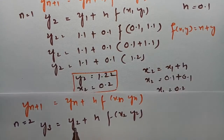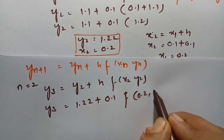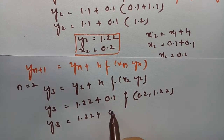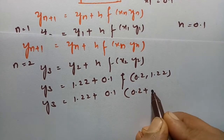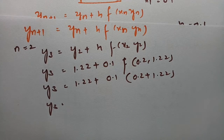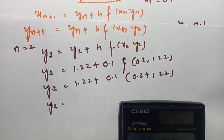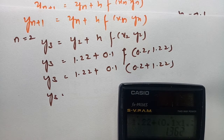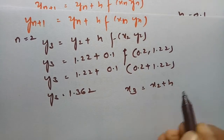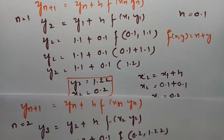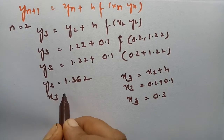y_2 = 1.22. So y_3 = 1.22 + 0.1 · f(0.2, 1.22). Since f(x, y) = x + y: 0.2 + 1.22 = 1.42. Therefore y_3 = 1.22 + 0.1 × 1.42 = 1.22 + 0.142 = 1.362. And x_3 = x_2 + h = 0.2 + 0.1 = 0.3.